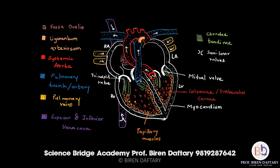When the right atrium contracts, the tricuspid valve opens, allowing blood to flow from the right atrium to the right ventricle. As the right ventricle contracts, the tricuspid valve closes, preventing backflow, and blood passes into the pulmonary trunk — the semilunar valves open, then close to prevent backflow. Similarly, when the left atrium contracts, the bicuspid valve opens; when the left ventricle contracts, it closes, and blood passes into the aorta with the semilunar valve opening then closing.